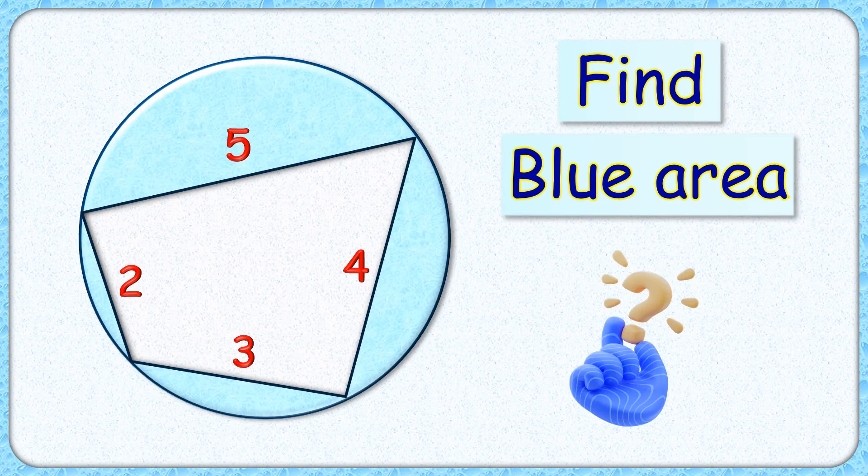Welcome everyone. In this interesting question, we have a blue circular sheet from which a cutout is made in the form of a quadrilateral with side lengths 2, 3, 4, and 5 centimeters.